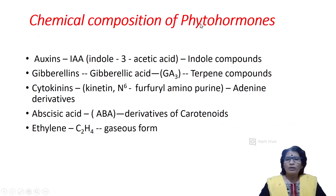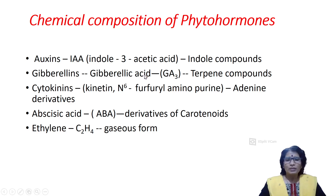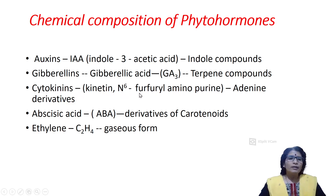Chemical composition of phytohormones: Auxins have the chemical name indole-3-acetic acid, short form IAA, and are made up of indole compounds. Gibberellins have the chemical name gibberellic acid, short form GA3, and are made up of terpene compounds. Cytokinins have the chemical name kinetin (N6-furfuryl-aminopurine) and are made up of adenine derivatives. Abscisic acid, short form ABA, is made up of carotenoid derivatives. Ethylene has the formula C2H4 and is present in the plant body in gaseous form.